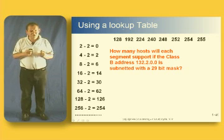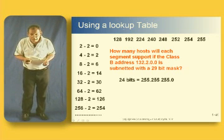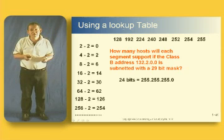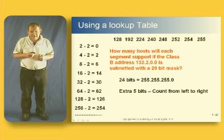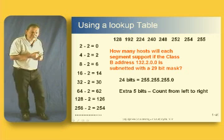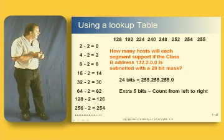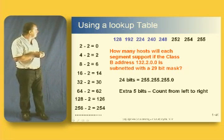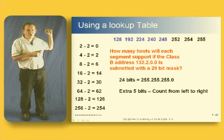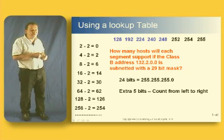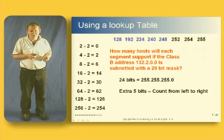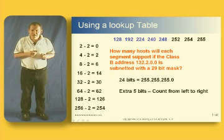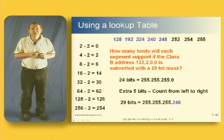The first thing we need to do is work out what a 29-bit mask is. We know a 24-bit mask is 255.255.255.0, so we need an extra five bits of networking. Looking at the table, an extra five bits of networking gives us a mask of 248 in the last octet. So a 29-bit mask equates to the decimal value 255.255.255.248.